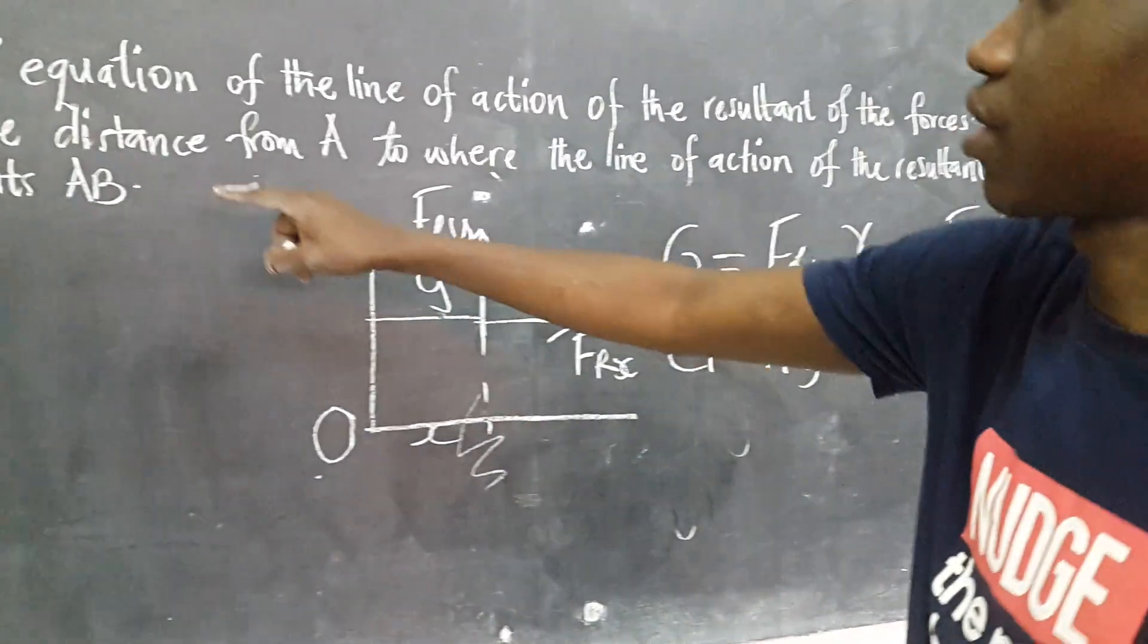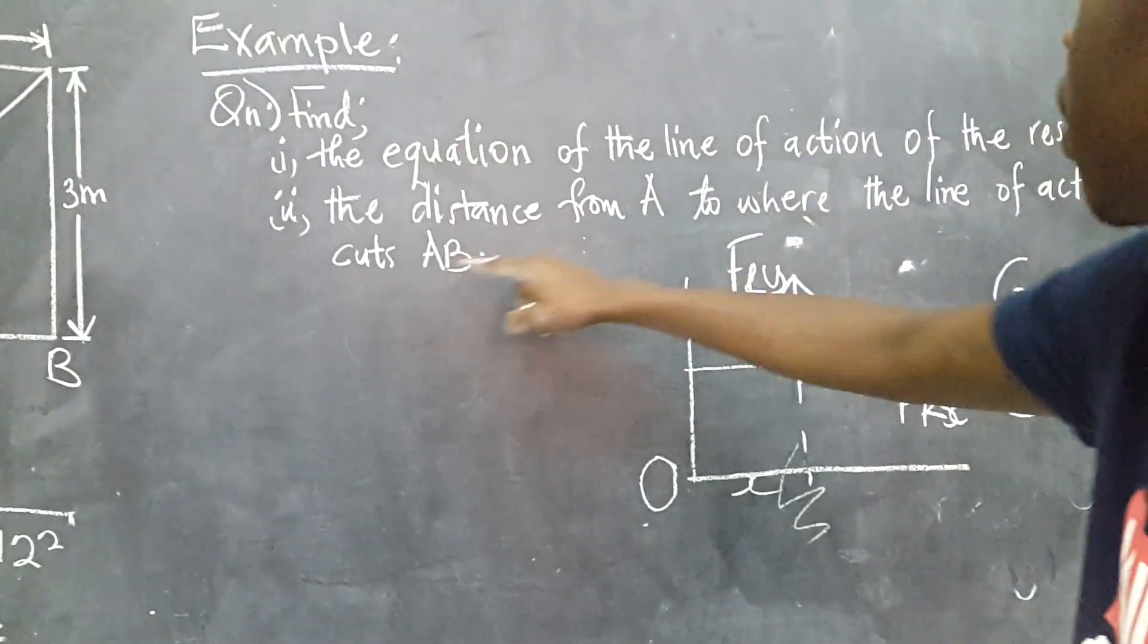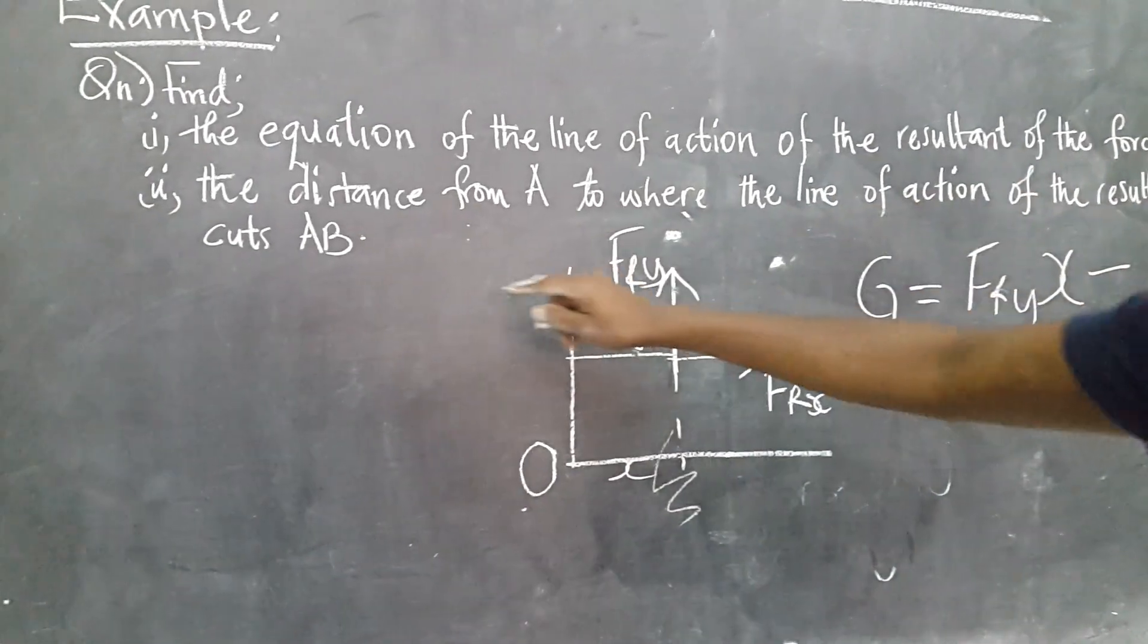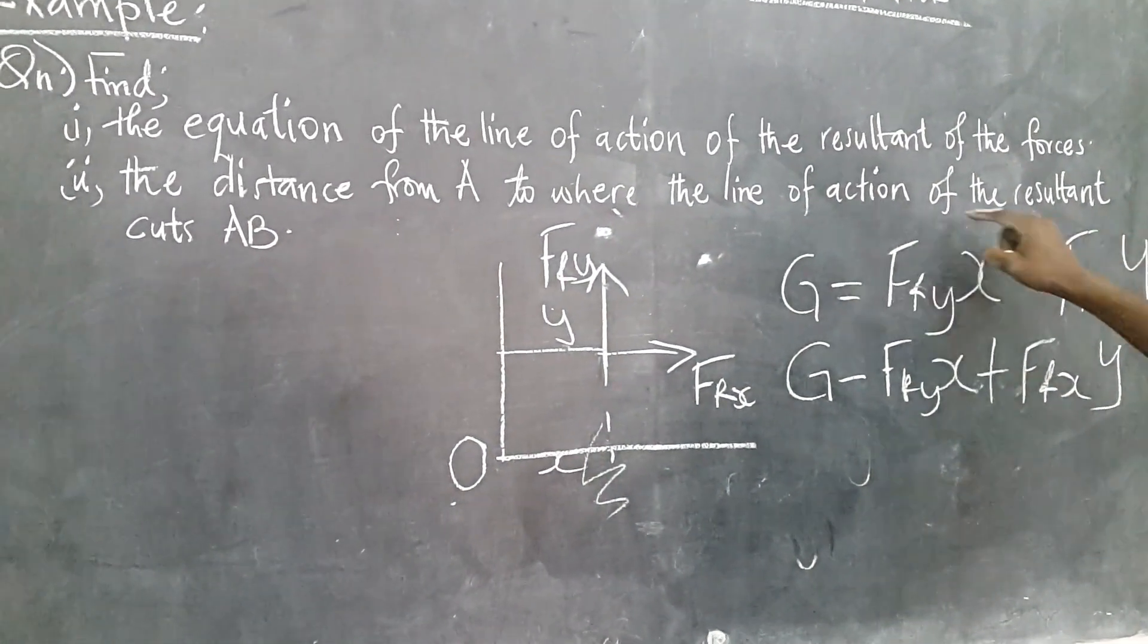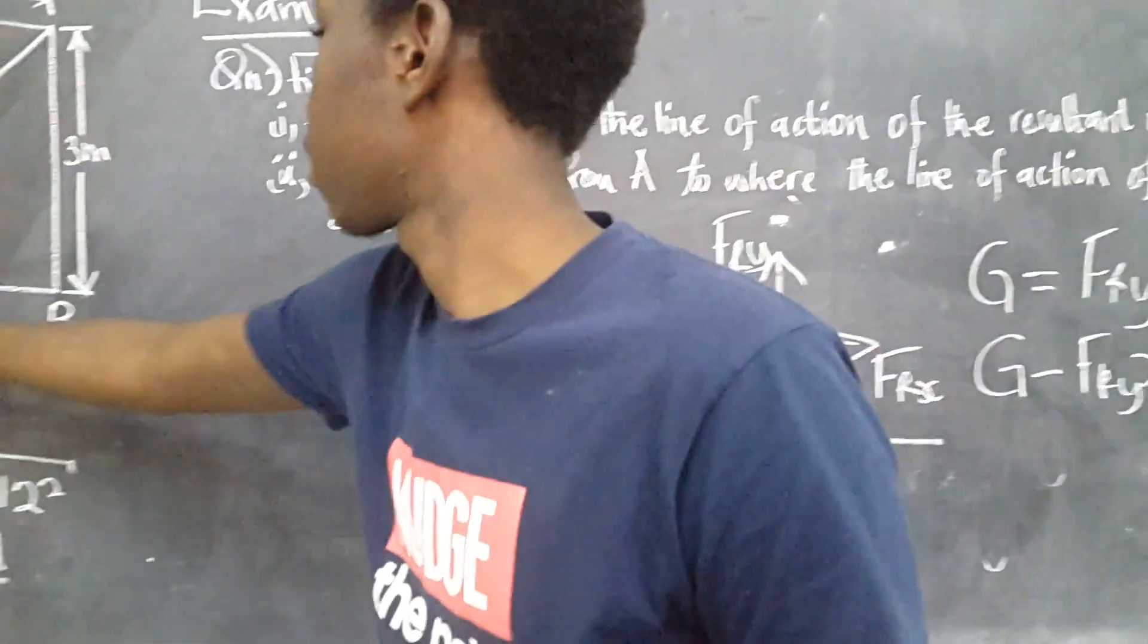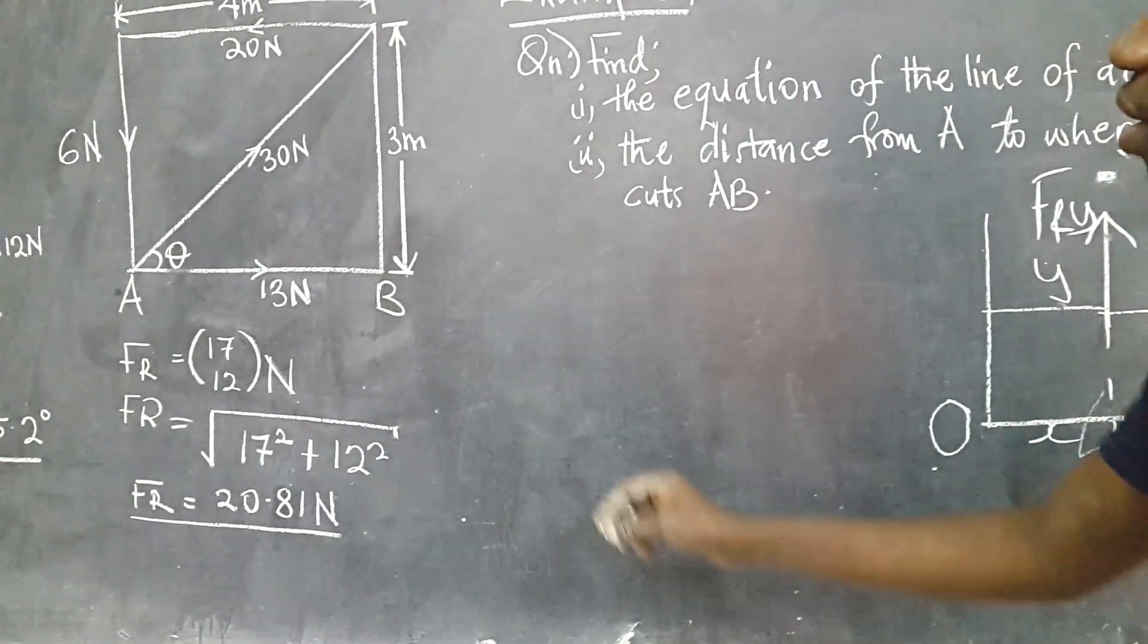we are now going to apply it to this example. This example says, find the equation of the line of action of the resultant force and find the distance from A where the line of action of the resultant force cuts AB.